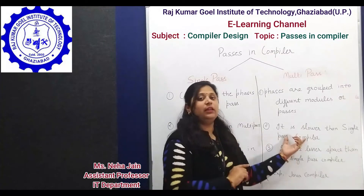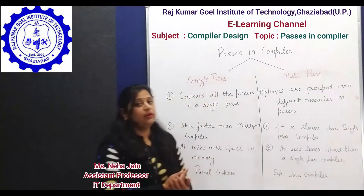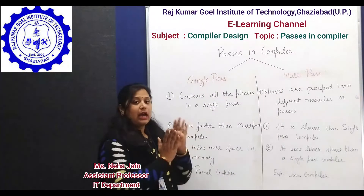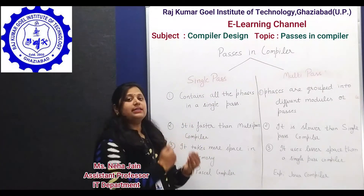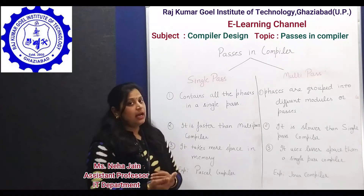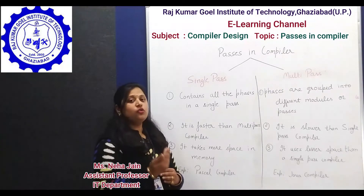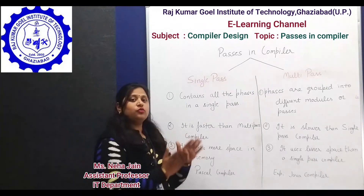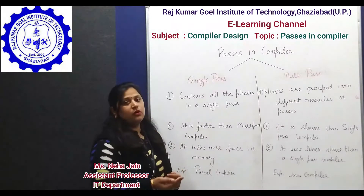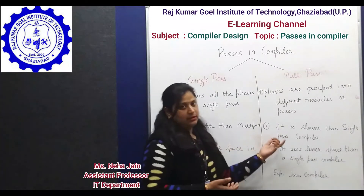The subsequent pass then loads into main memory, reads from the intermediate file, takes the output of the previous pass as input, converts it according to its phase, and stores the output in the intermediate file for use by subsequent passes.